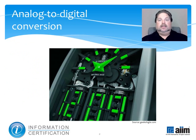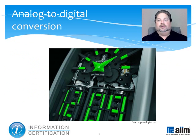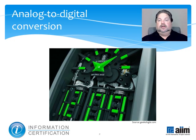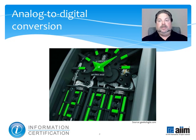Simply put, analog-to-digital conversion means capturing an analog signal in digital form. More technically, it's an electronic process in which a continuously variable analog signal is changed, without altering its essential content, into a multi-level or digital signal. One common example of this kind of conversion for storage and preservation purposes is scanning a paper document and converting it into a TIFF, JPEG, or PDF file that can be stored on a hard drive, CD, or other digital medium.